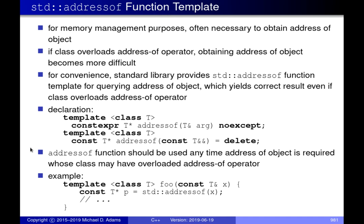When you take the address of something where the type is not known — this would only arise in the context of templates — you're writing template code and you don't know what the type is. Because of this, you wouldn't want to use ampersand, because maybe that particular type overloads the address-of operator and doesn't actually give you the address. So this is the context in which `addressof` should be used.